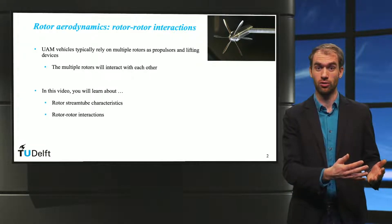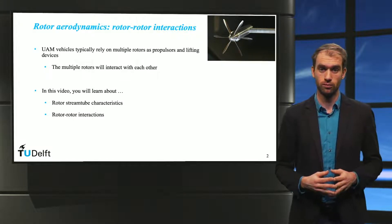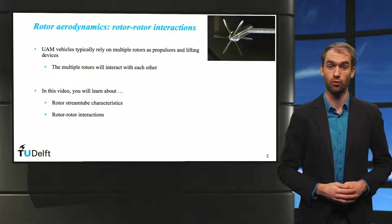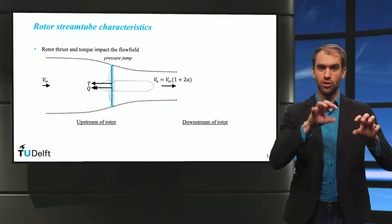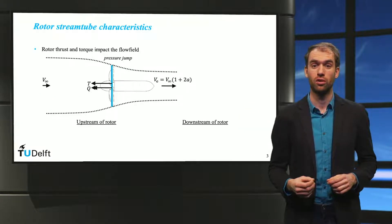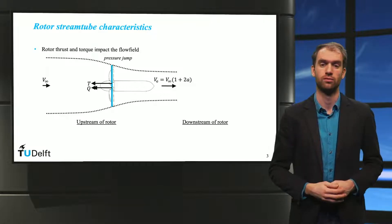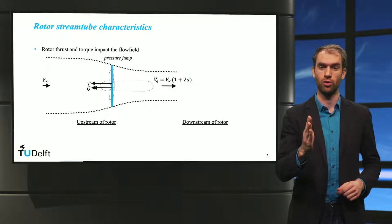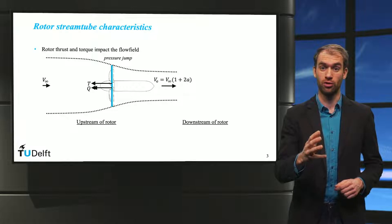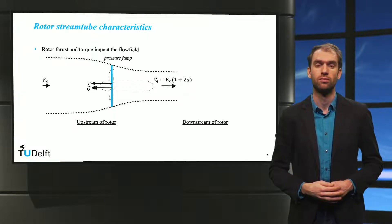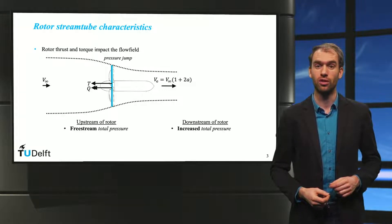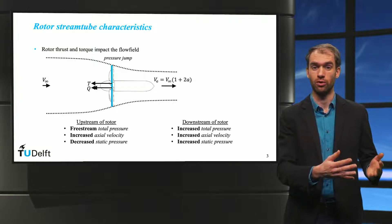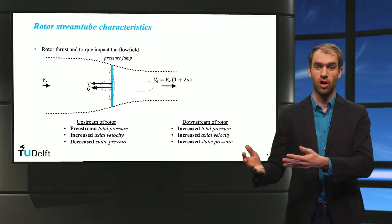First, we will briefly discuss the characteristics of the rotor stream tube. Then, we will treat the aerodynamics of rotor-rotor interactions and their effect on rotor performance. The interactions between different rotors are the consequence of the rotor-induced changes to the flow field. The rotor thrust can be considered as a pressure jump across the rotor disc, which increases the total pressure downstream in the slipstream of the rotor. The static pressure upstream of the rotor is decreased, while downstream it is higher than that of the freestream.